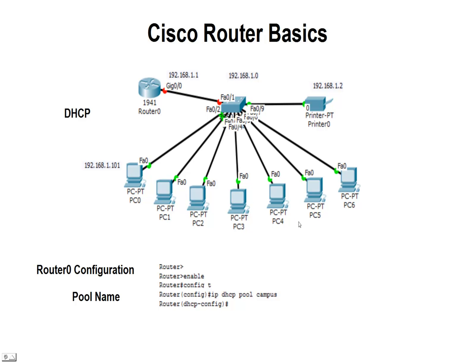I made up a network here in Packet Tracer. I've got one 1941 router up here on the left. I've got a switch — it's actually a 2960. I've got a printer connected to it and 1, 2, 3, 4, 5, 6, 7 PCs.